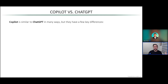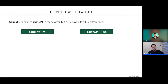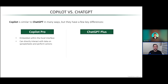They are similar in many ways — both built on top of an LLM — but they do have a few key differences. I'm going to compare Copilot Pro with ChatGPT Plus, and I believe they both cost the same or very similar monthly subscription costs. Copilot is actually embedded within the Excel interface, which means it can directly interact with the data on the spreadsheets and perform actions. ChatGPT, on the other hand, operates as an independent tool you open on a separate web browser.